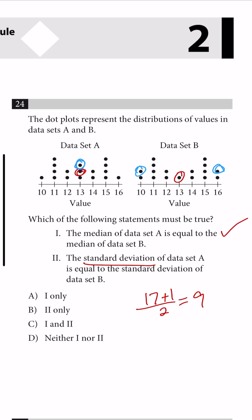But we notice that data set B has these further out points, which means that on average, the points vary more. So it has a larger standard deviation. So part two is not correct, which leaves us with the answer A.